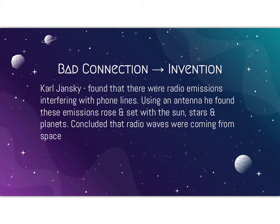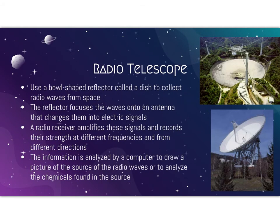They built the first radio telescope, which was really just this antenna, and then it developed from there. A radio telescope uses a bowl-shaped reflector called a dish to collect radio waves from space. This dish collects radio waves and beams them to this antenna, this radio receiver. The reflector focuses the waves into the antenna, which changes them into electrical signals, and then these signals are amplified.